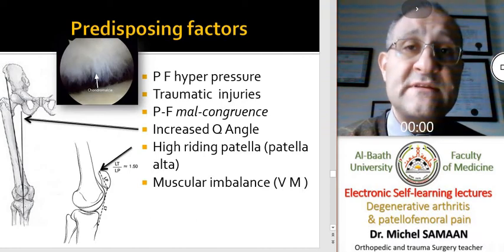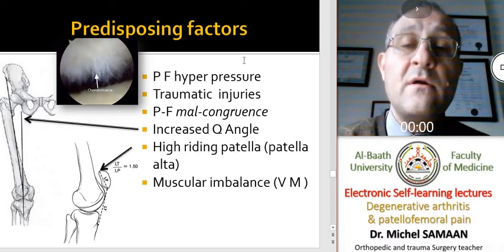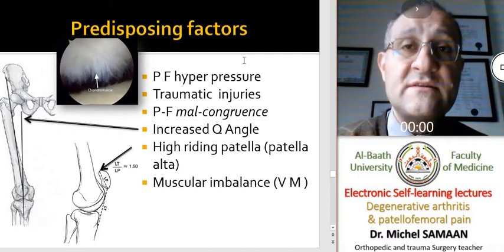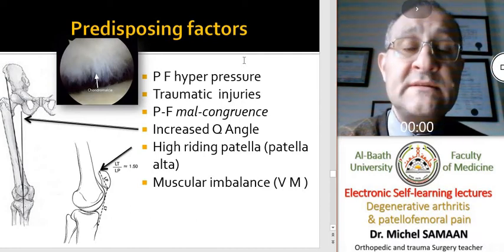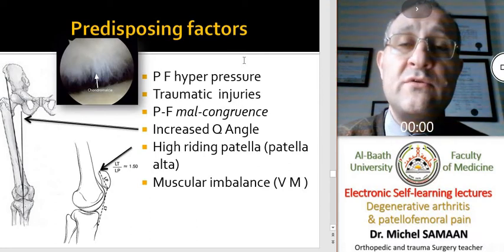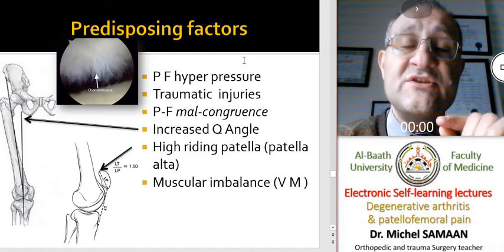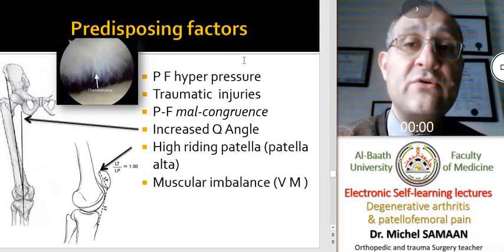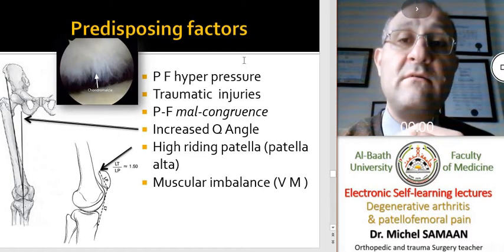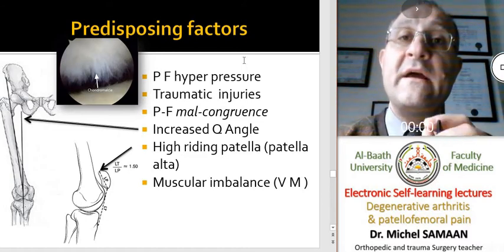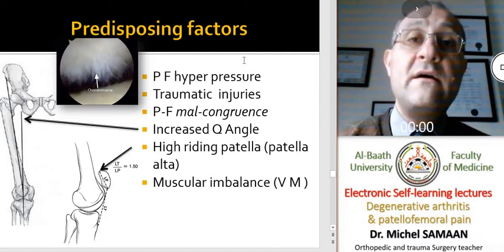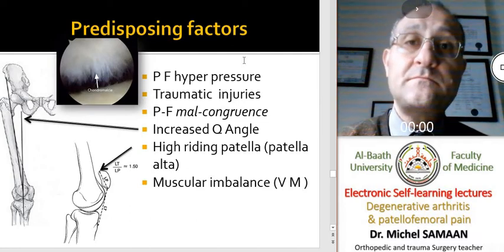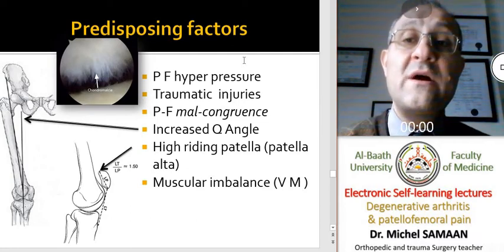There are many predisposing factors. Any factor that increases patellofemoral pressure will cause softening of the cartilaginous layer of the patella. The problem here is not degeneration of the cartilage, but hyperpressure in the patellofemoral joint, which causes congestion in the subchondral bone and, as a consequence, anterior knee pain. This includes any traumatic injury, any malcongruence between the patella and the femur, and an increase of the Q-angle — the quadricipital angle.